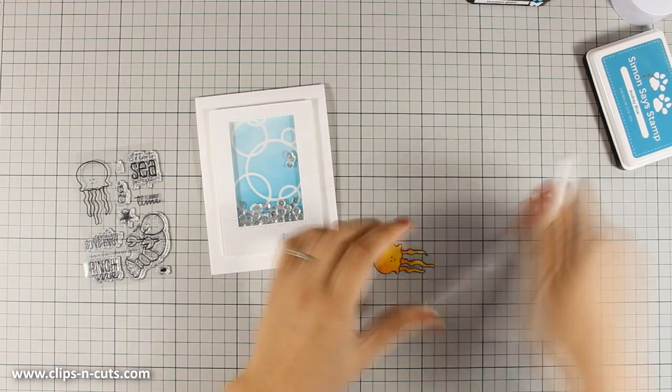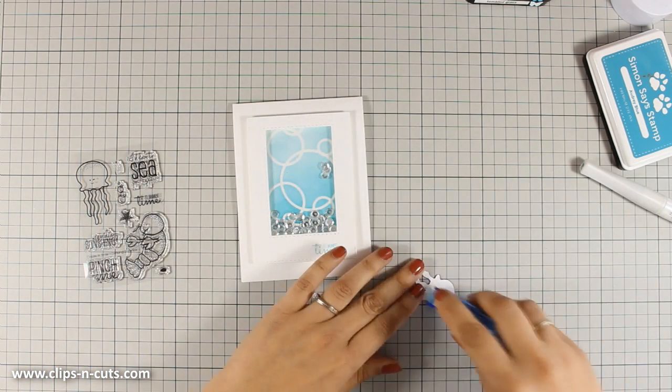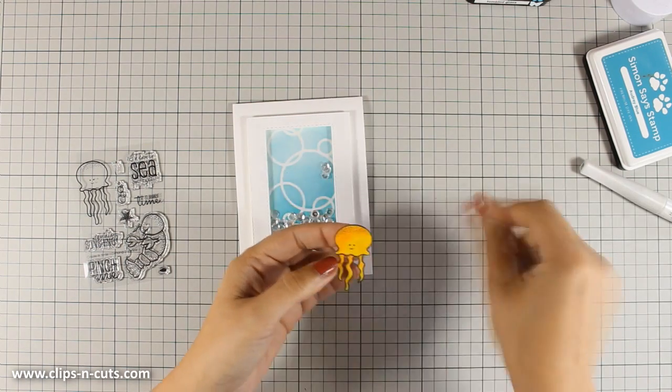So now I can add some tape adhesive at the back of the jellyfish. I am trying to decide where this is going to go. And now I am going to stick it over the shaker card.